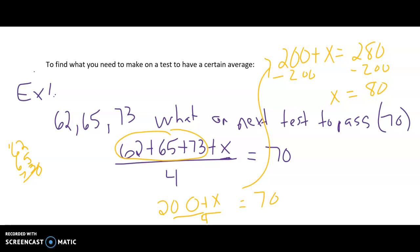So in conclusion, if I wanted to pass the class with a 62, a 65, and a 73, my last test I would have to get an 80.